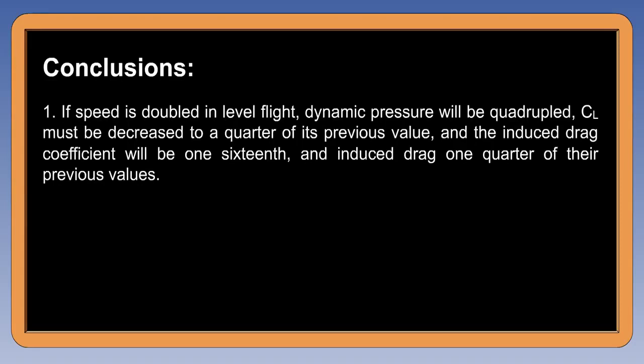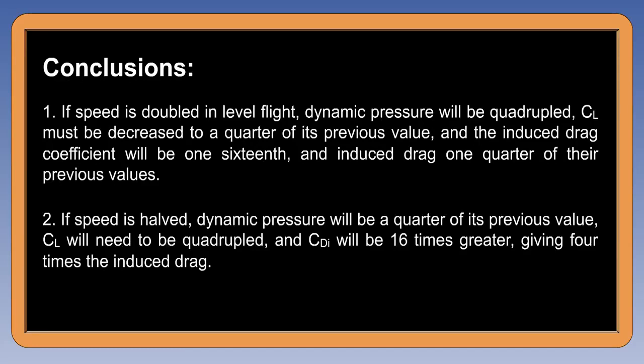The conclusions are that if speed is doubled in level flight, dynamic pressure will be quadrupled, CL must be decreased to a quarter of its previous value, and the induced drag coefficient will be one sixteenth and the induced drag one quarter of their previous values. If speed is halved, dynamic pressure will be a quarter of its previous value, CL will need to be quadrupled, CDI will be sixteen times greater, giving four times the induced drag.